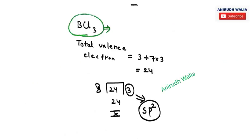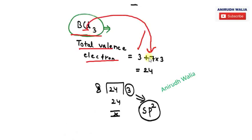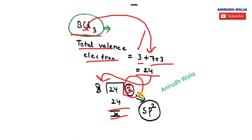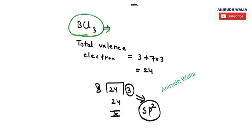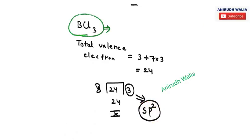Next example: BCl3, boron trichloride. Boron is a group 13 element with 3 valence electrons. Chlorine has 7 valence electrons, and there are 3 chlorines: 7 × 3 = 21, plus 3 = 24 total valence electrons. 24 lies between 8 to 56, so divide by 8. 24 ÷ 8 = 3 with remainder 0. Three orbitals means the hybridization is sp2 — 1 for s and 2 for p.